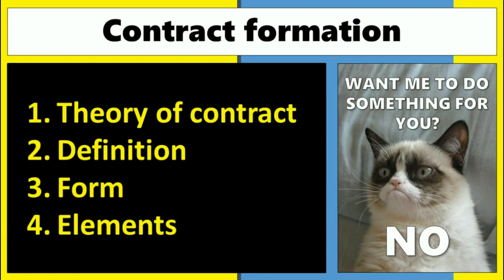This is the first in a series on contracts. We're going to begin by looking at the aspect of contract law known as formation. But first we're going to start by looking at the underlying theory of contracts and contract law and look at a simple definition of what a contract is. After that we're going to look at some of the structural aspects and requirements for a contract to come into existence — firstly the form, and then the seven elements that must be present.